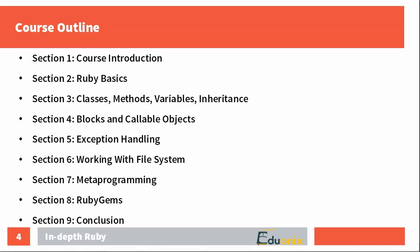In section four we'll talk about blocks and callable objects like lambdas and procedures. Section five covers how to rescue from exceptions to make your program more bulletproof. In section six we'll work with the file system and learn how to read and write to various streams. Section seven introduces metaprogramming — probably the most powerful feature — where you'll learn how to manipulate a program during runtime, introduce new methods and classes, tweak existing classes, and remove methods.